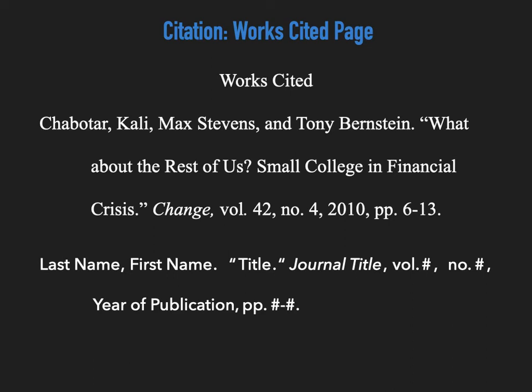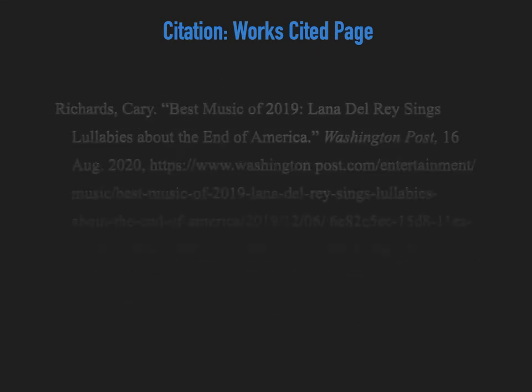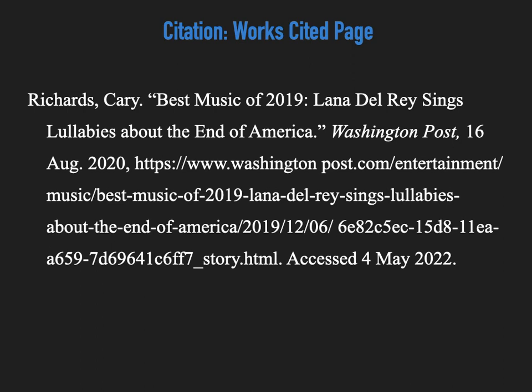Before we proceed on to discussing how to cite books and websites, let's quickly examine how to cite newspaper articles, as that process is very similar to a journal article. Here we have a citation for an online newspaper. For citing an online newspaper article or magazine article, there are only a few differences from the citation of a journal article. We will begin with the author information. We start with the author's last name, insert a comma, provide the author's first name, and then end the author section with a period.